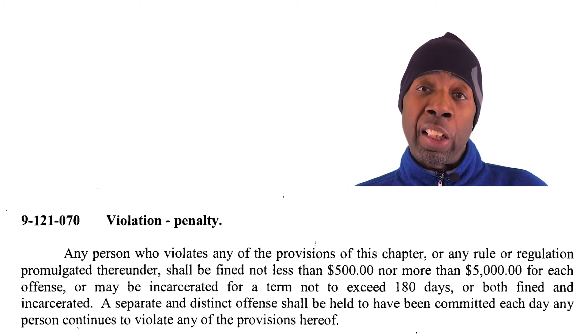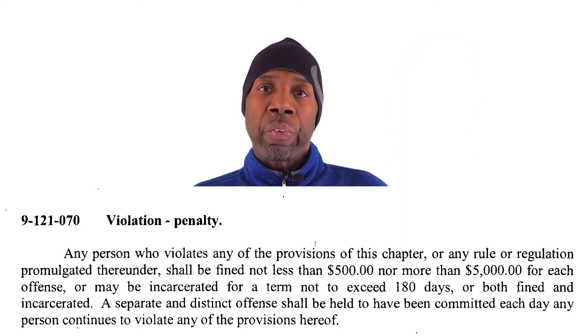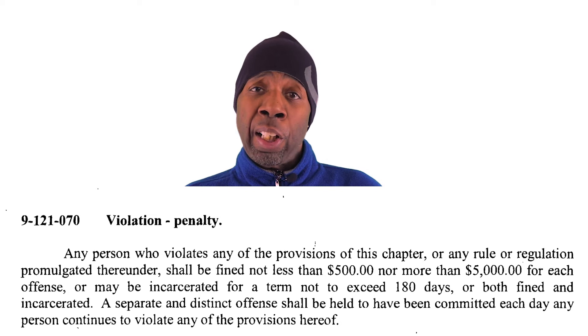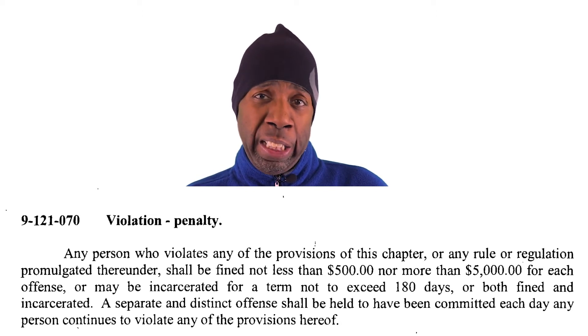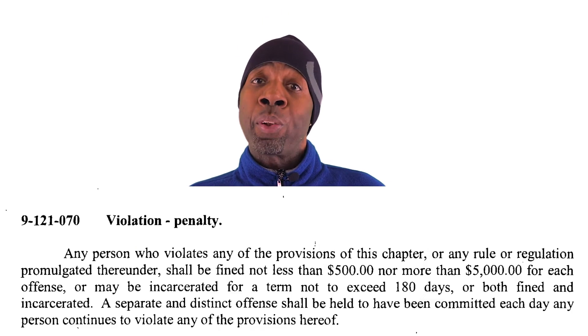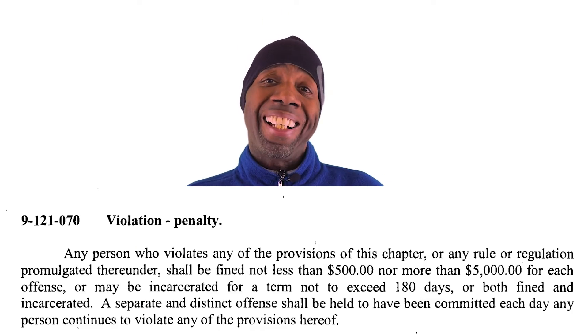Now the penalty for violating the ordinance can be not less than $500 nor more than $5,000 for each offense, or may be incarcerated for a term not to exceed 180 days — that's six months — or both fine and incarcerated. There's another section on seizure and unlawful use, but you can download that and read it later. So my friends, this is the answer to how to fly your drone in Chicago — legally, that is.